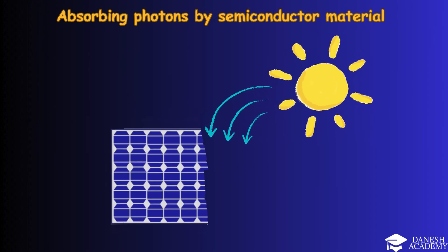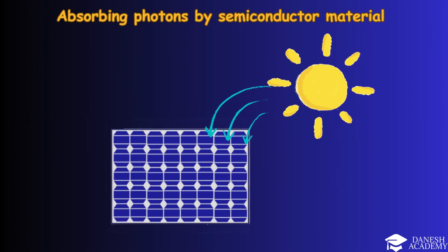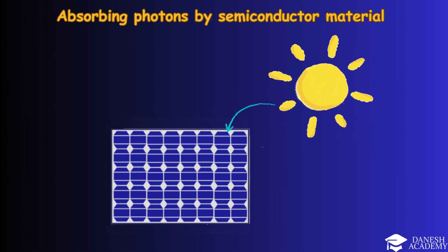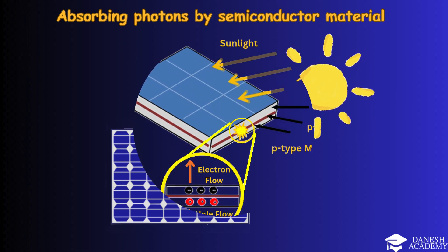When sunlight strikes the solar panel, its photons are absorbed by the semiconductor material, typically silicon. This material is designed with a structure that enables the conversion of light energy into electrical energy. Let's break it down in detail.